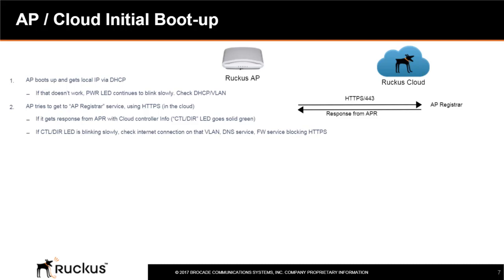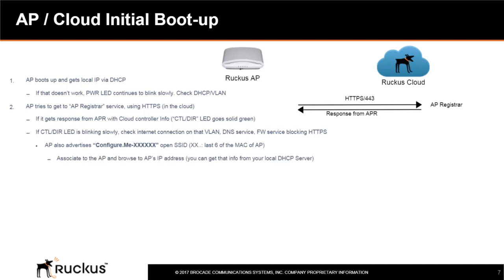However, if the Control or DIR LED continues to blink slowly, check your internet connection on your VLAN, DNS service, or firewall service blockage for HTTPS. If the AP has the control LED blinking slowly for a long time, it will advertise an open SSID with no passkey called 'Configure Me' with the last six digits of the MAC address of the AP. Associate to this SSID and browse to the AP's IP address, which you can get from the local DHCP server, to read the AP's IP and DNS info and ask the AP to connect to cloud.